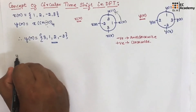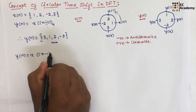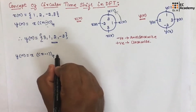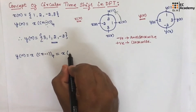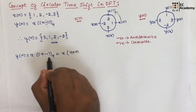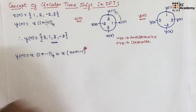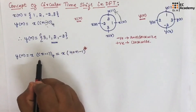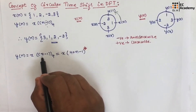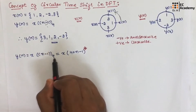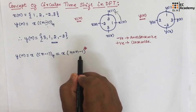Let us write y of n equal to x of n minus 1 mod 4. For this equation, we can write x of n, and we need to add 4. So it will be x of 4 plus n minus 1. This is a very important concept. The equivalent representation uses the mod value — here mod 4, so we add 4. If they give 6, we add 6 plus n; if they give 8, we add 8 plus n. Since they have given 4, we add 4 plus n minus 1.